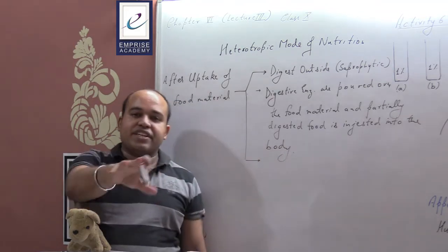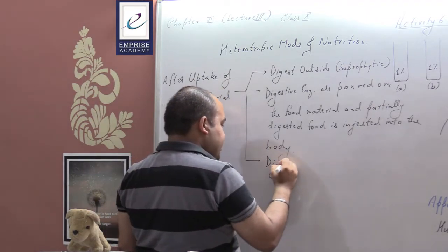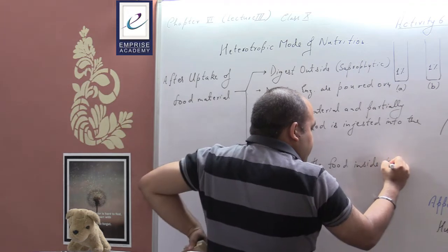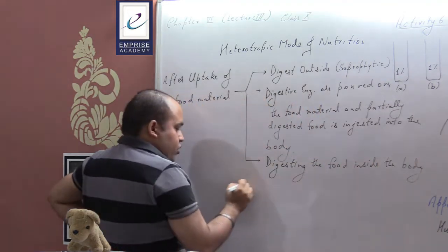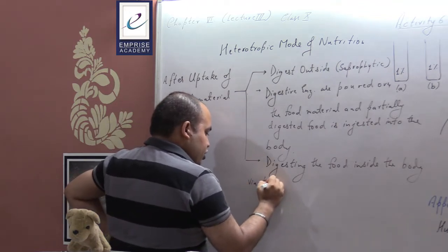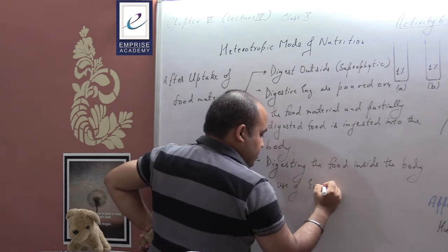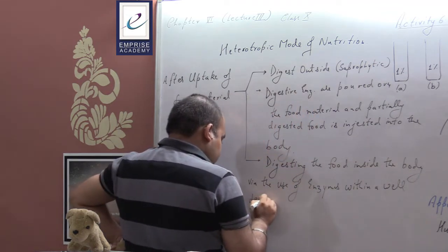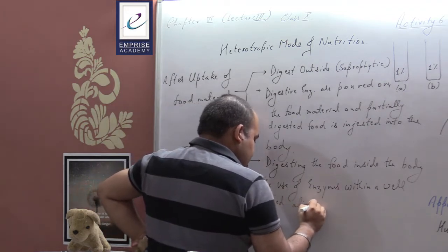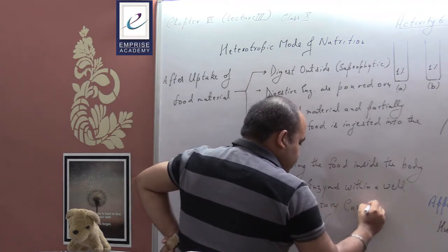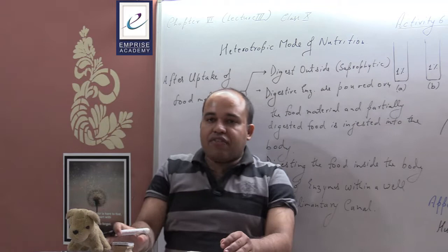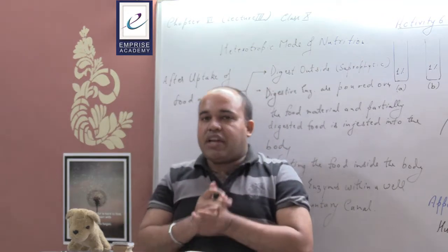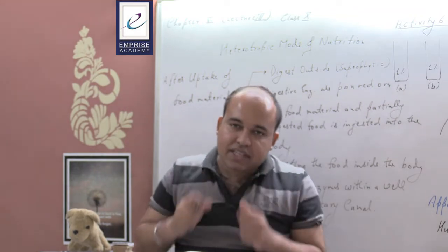The second mechanism involves digesting the food inside the body via the use of enzymes within a well-developed alimentary canal. Digestion can be divided into two types: intracellular digestion, which takes place in simpler organisms, and extracellular digestion, which takes place within a hollow cavity inside the body.